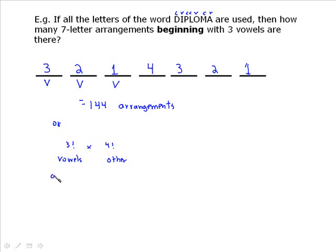Alternatively, for vowels you could say 3P3, and for the remaining letters 4P4, then multiply. I really recommend the original slot setup though — at least to understand the question first.